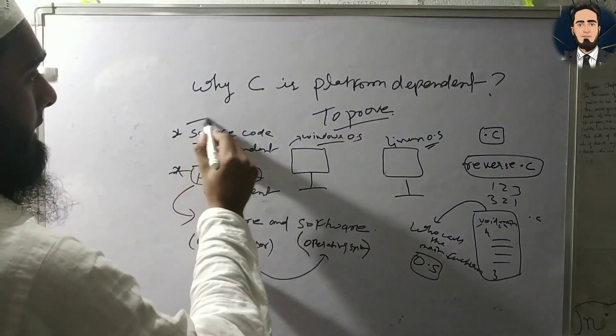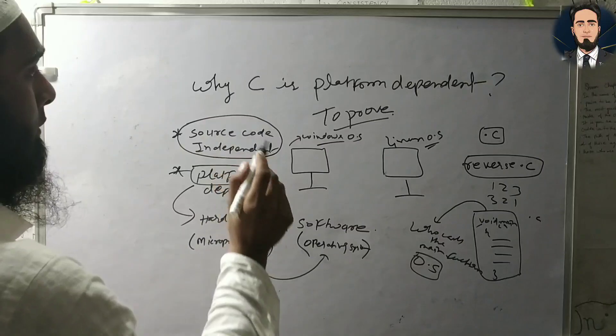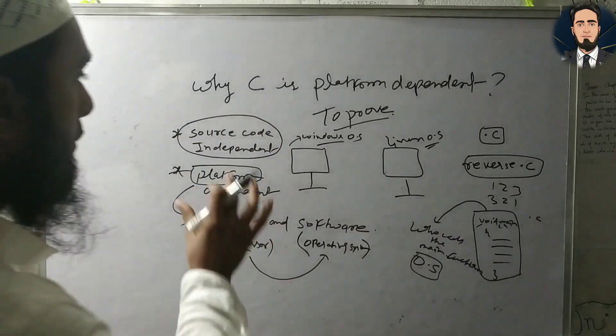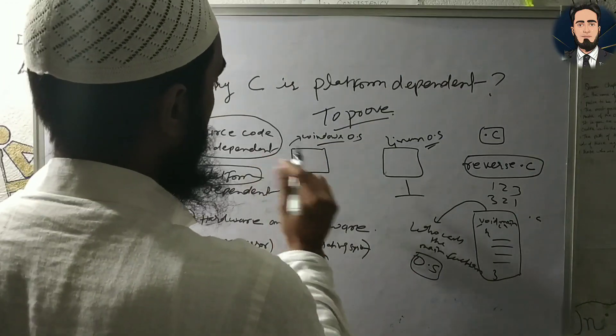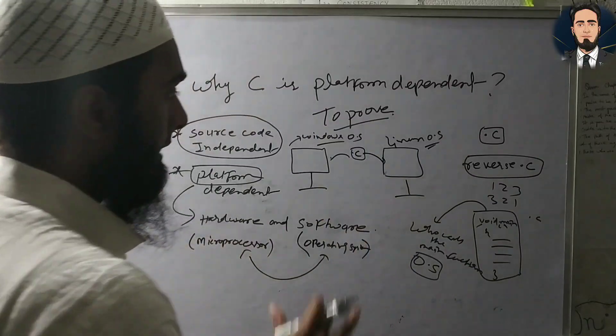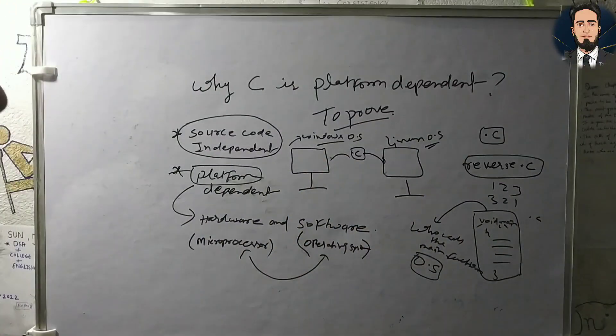Now, I have told you why the C file is source code independent. You can put the code anywhere. You can put the .c file anywhere on this platform or on this platform. It will be accessible and acceptable.